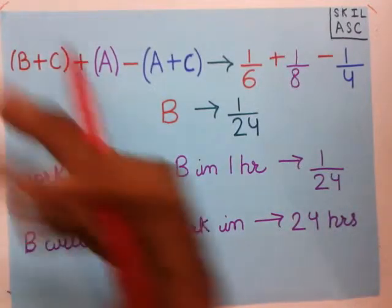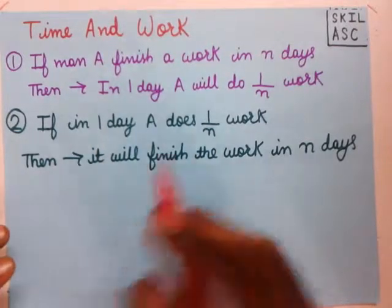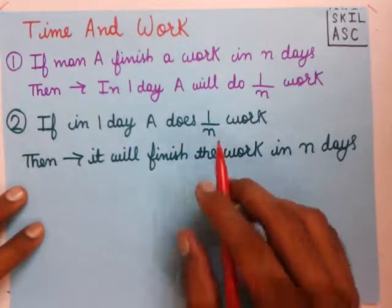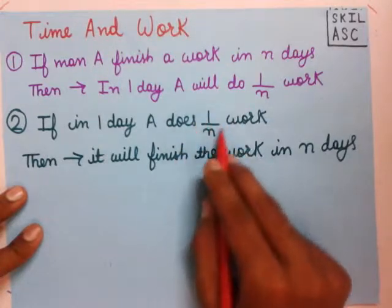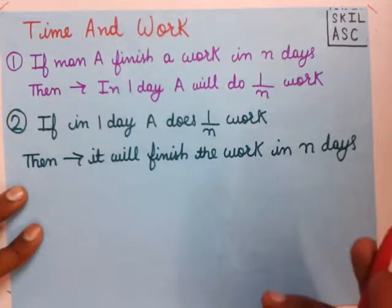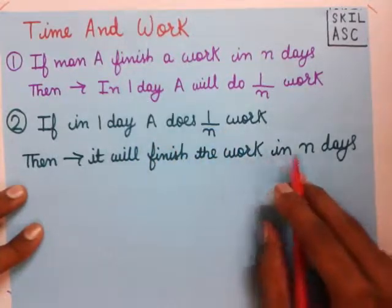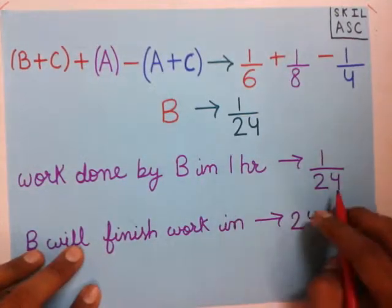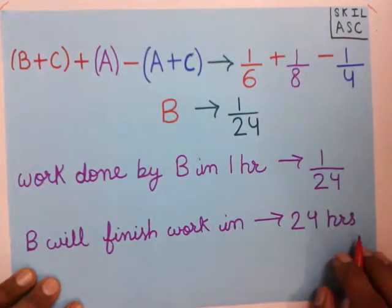We take help of Rule Number 2 of time and work. Rule 2 says: if work done by A in one day is 1 by N, then A will finish the work in N days — we take the reciprocal. So if work done by B in one hour is 1 by 24, then B will finish the work in 24 hours. That is our answer.